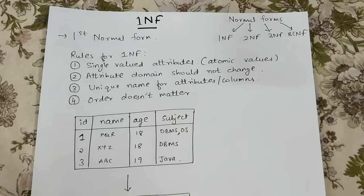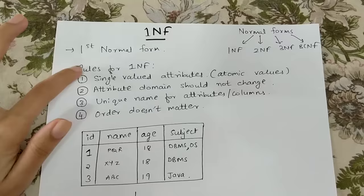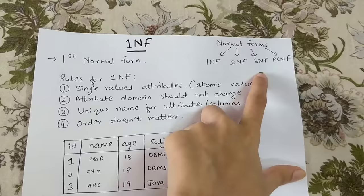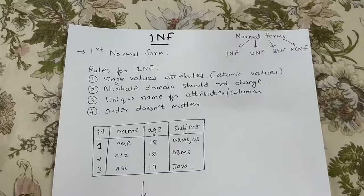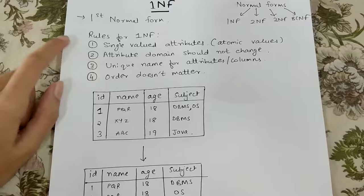In this video we understand what 1NF is. 1NF is basically First Normal Form. There are four major normal forms: 1NF, 2NF, 3NF, and BCNF. In this video we'll understand what 1NF is. It's very basic and very easy. There are four rules for a table to be in 1NF.